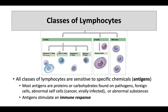Helper T cells don't actually kill anything. Instead, they're going to help regulate the cytotoxic T's, and they actually help regulate the B cells too.